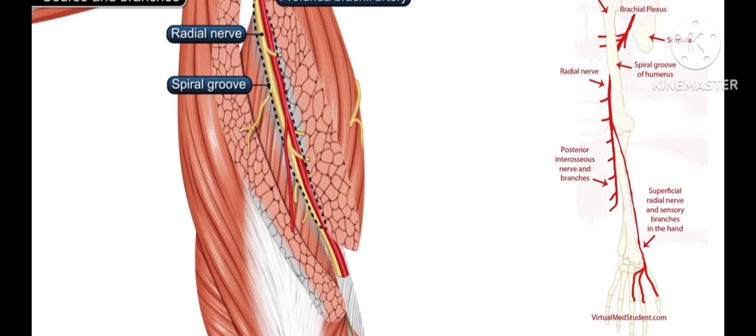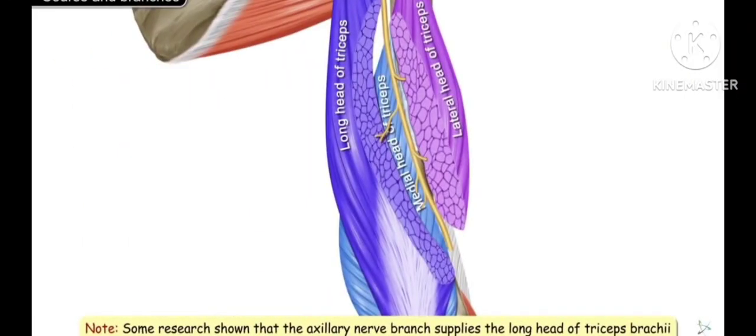This is the radial groove in the posterior humerus. In the posterior groove, the radial nerve gives three branches for the three heads of the triceps. The triceps is in the posterior compartment and has three heads: the long head, medial head, and lateral head.